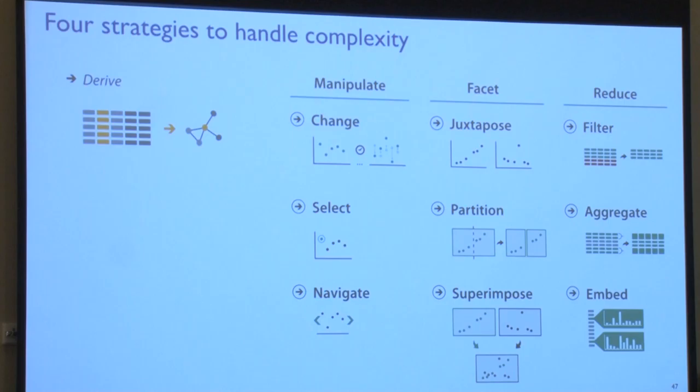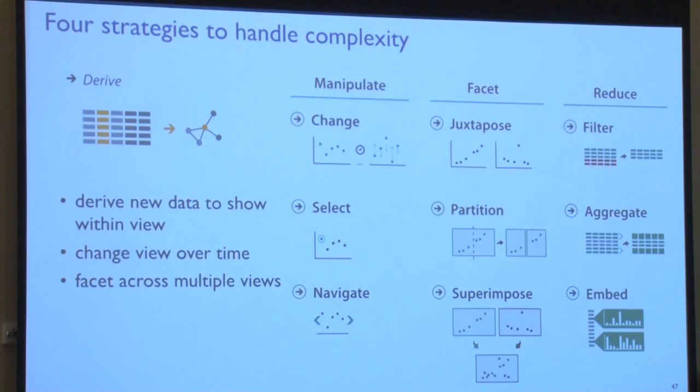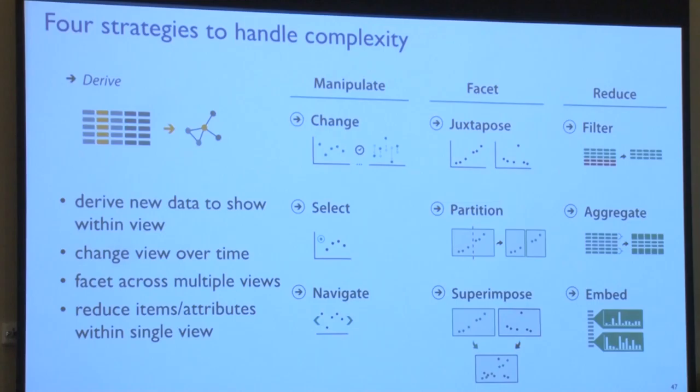Deriving new data is one of four strategies to handle complexity. There are also things like making the view interactive and changing it over time, strategies for multiple views often linked together with interactive highlighting — faceting into more than one view rather than having a single view shoulder all the perceptual burden — and reducing within a single view how much you show, either through filtering or aggregation.